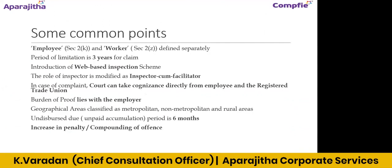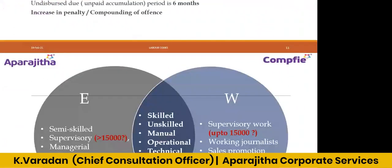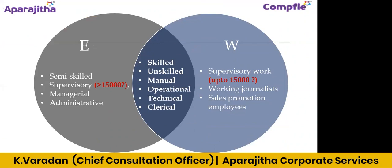These are certain common points with respect to the Code on Wages. Both 'employee' and 'worker' are defined. This is a kind of Venn diagram — E means employee, W means worker. In the intersection portion you can see skilled, unskilled, manual, operational, technical, and clerical workers. Whoever is doing skilled, unskilled, manual, operational, technical, or clerical work will be considered as both workers as well as employees — they fall under both definitions.